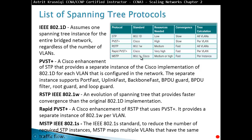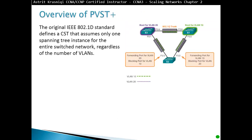Multiple Spanning Tree supports both Cisco and the open standard 802.1S. Resource needs are medium to high depending on how many instances you have, and convergence is very fast. Tree calculation is per instance. The original 802.1D standard defines Common Spanning Tree, assuming only one Spanning Tree instance for the entire switch network regardless of the number of VLANs.